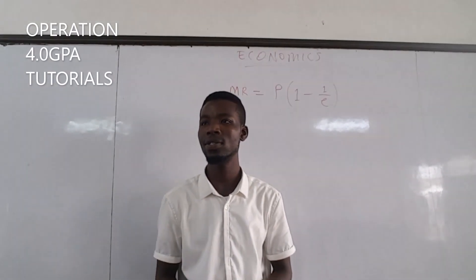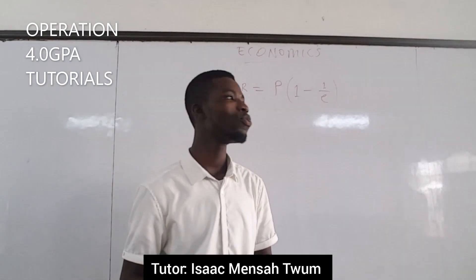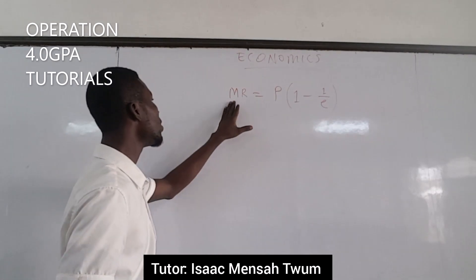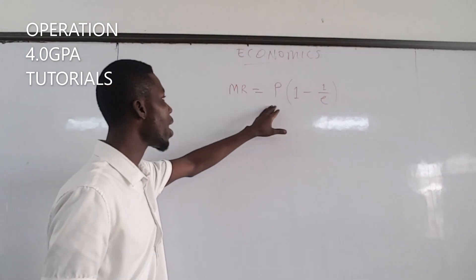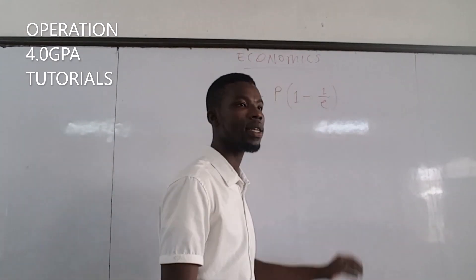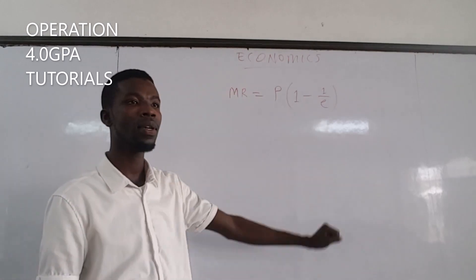Hello, you are welcome to Operation 4.0 GPA tutorials. Today we want to prove that marginal revenue equals price times bracket 1 minus 1 over the elasticity of demand.